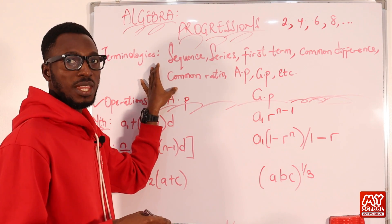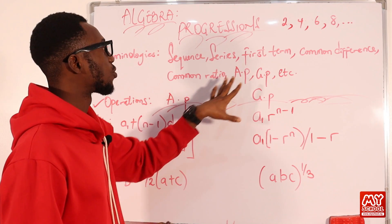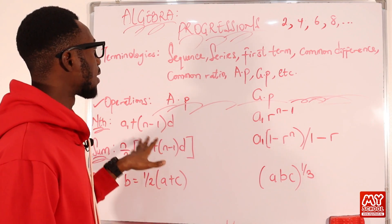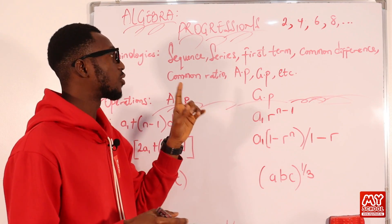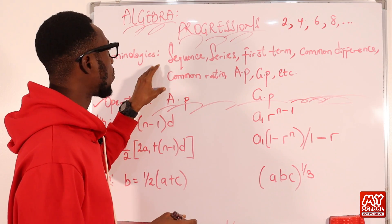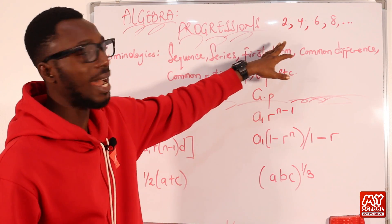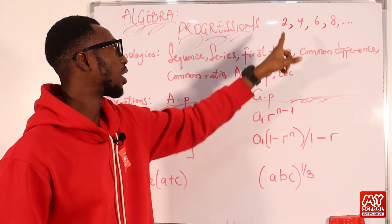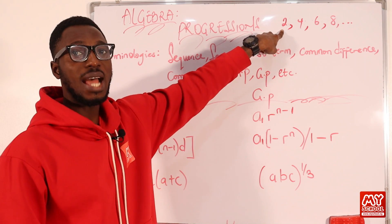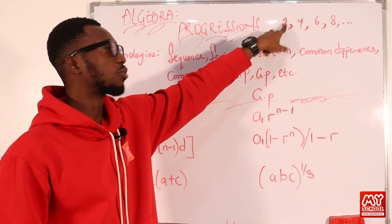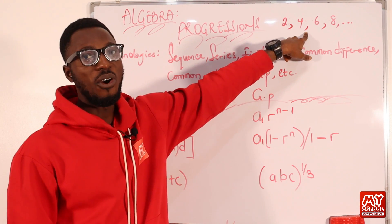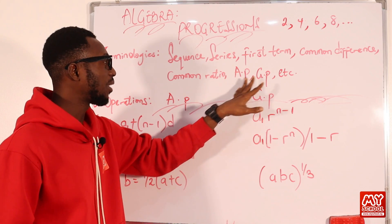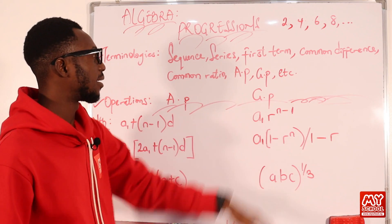We now have the common ratio. The common ratio is just like the common difference, but the key distinction is that in common ratio you are actually multiplying that particular value by the previous item to get the next item in the sequence.